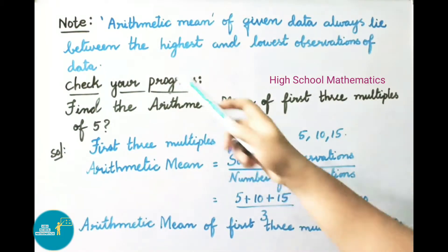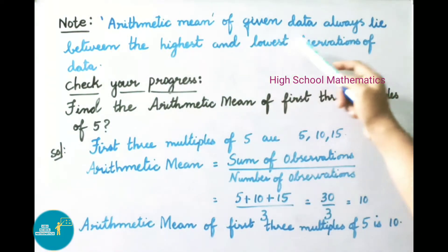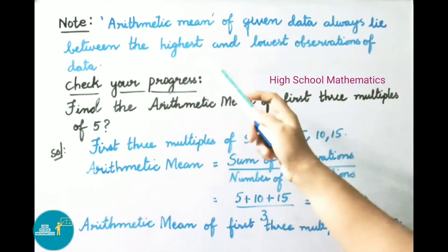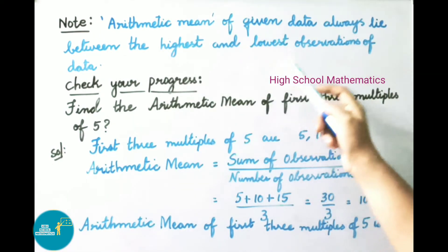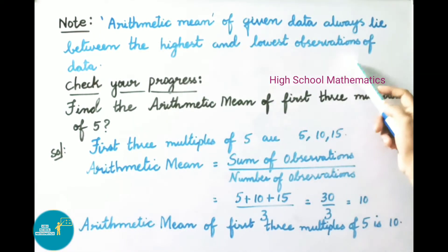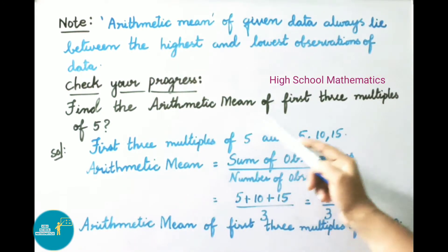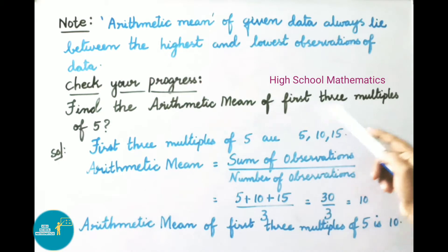Note: The arithmetic mean of given data always lies between the highest and lowest observations of the given data. Check your progress: Find the arithmetic mean of the first 3 multiples of 5.